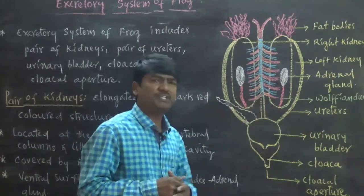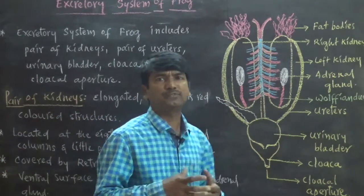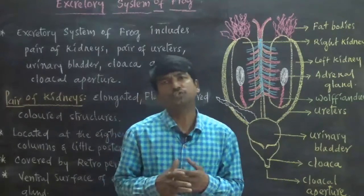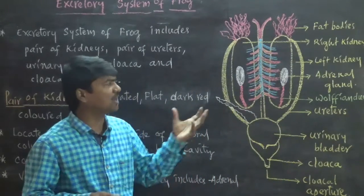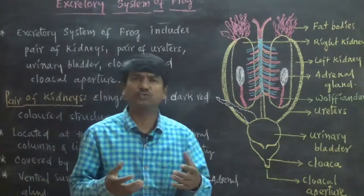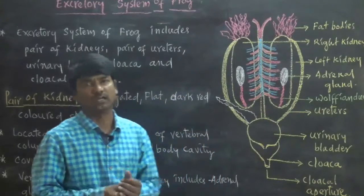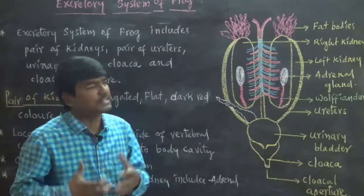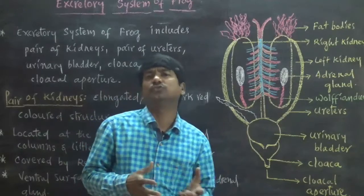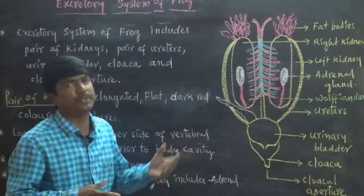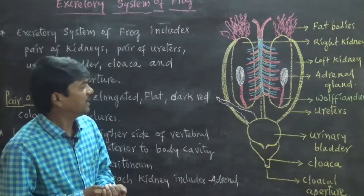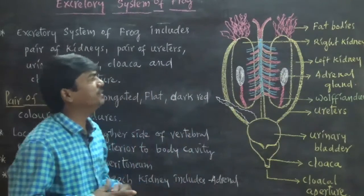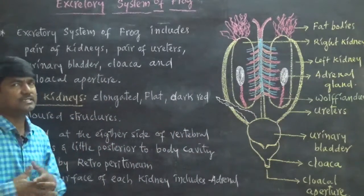On the surface of each kidney, a specific double layer membrane is present, known as the retroperitoneum. Hence these organs are also known as retroperitoneal organs, because their ventral side is connected by this particular membrane called retroperitoneum.